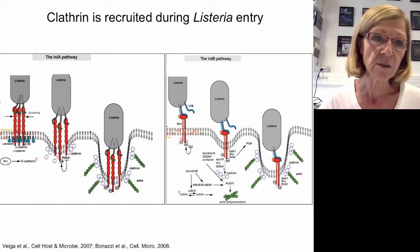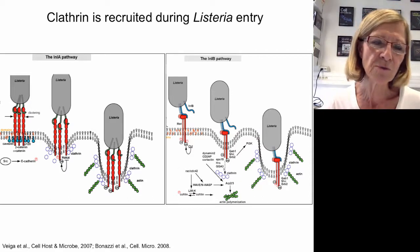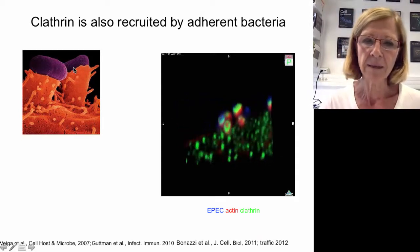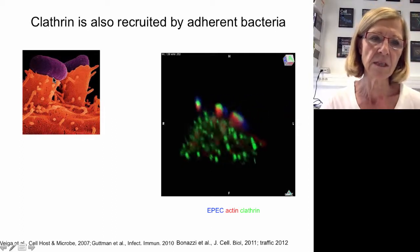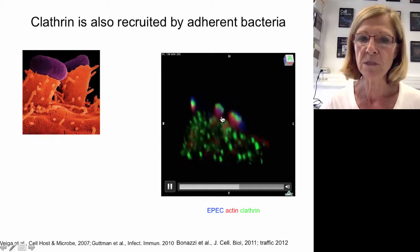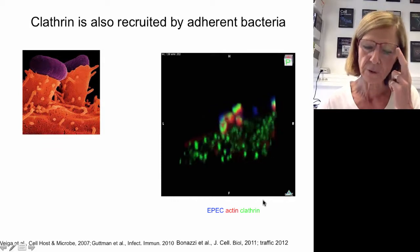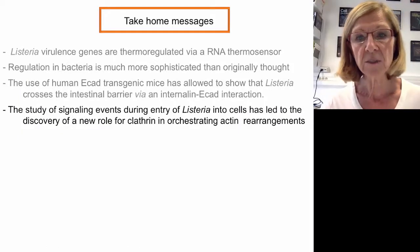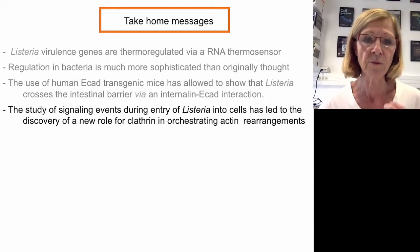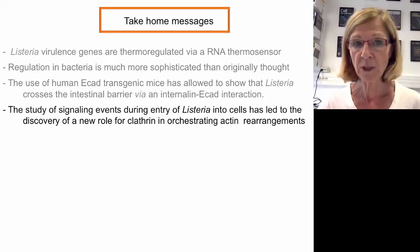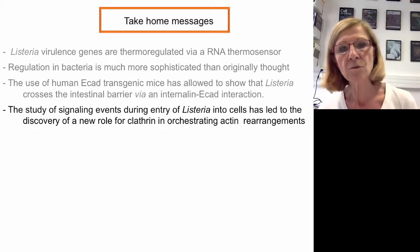Enteropathogenic E. coli producing pedestals in intestinal epithelial cells use clathrin for pedestal formation — you see the bacteria in blue, actin in red, and clathrin in green. Inhibiting clathrin inhibits pedestal formation. The study of signaling events during Listeria entry has led to the discovery of a new role for clathrin in orchestrating actin rearrangements. We have also been able to decipher the molecules linking clathrin to the actin cytoskeleton.